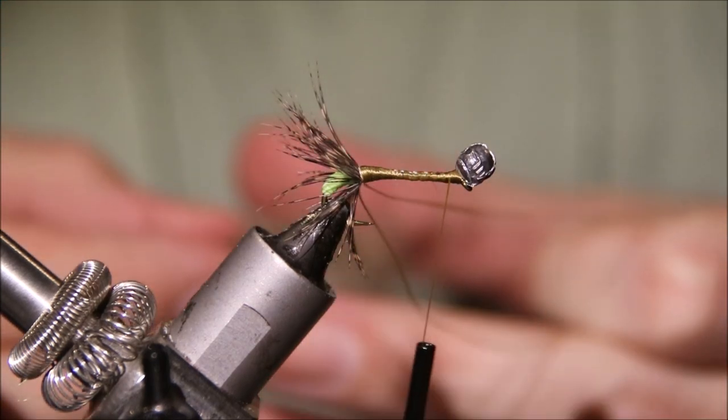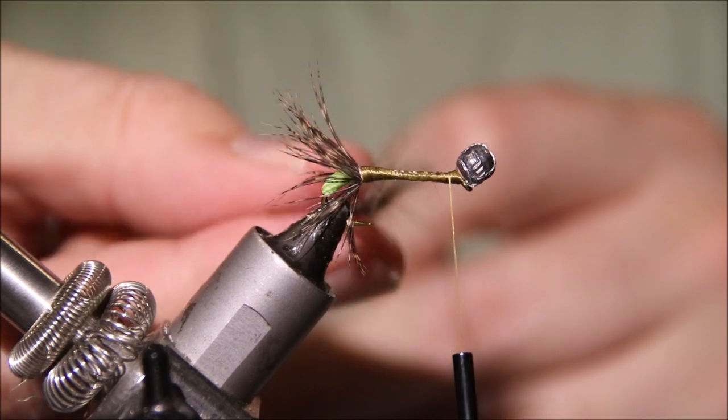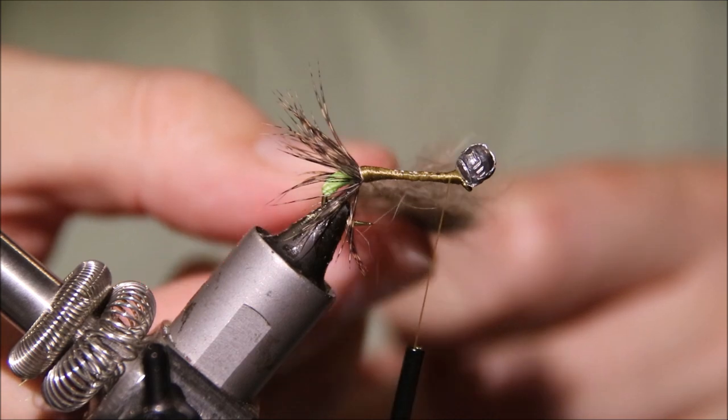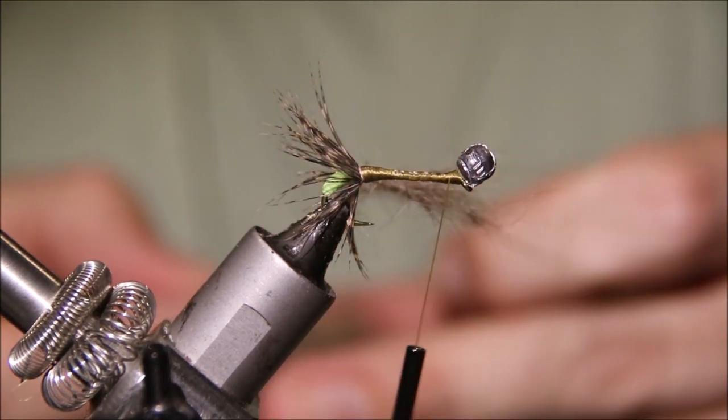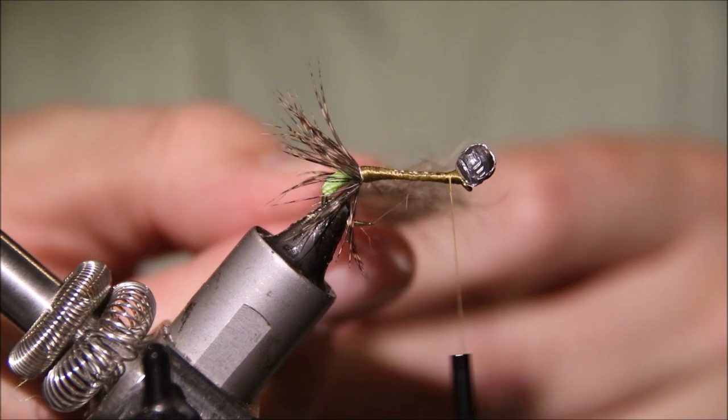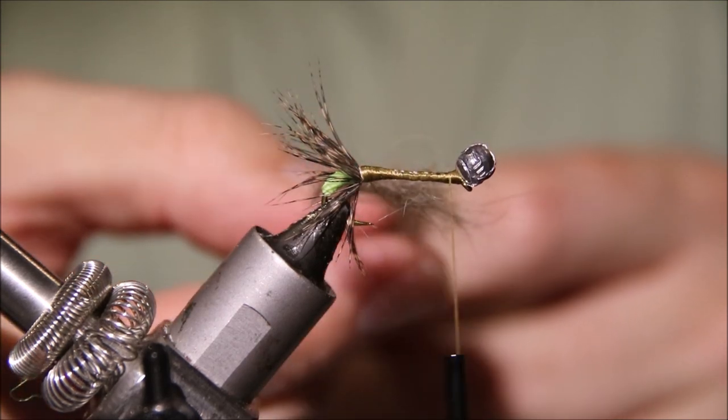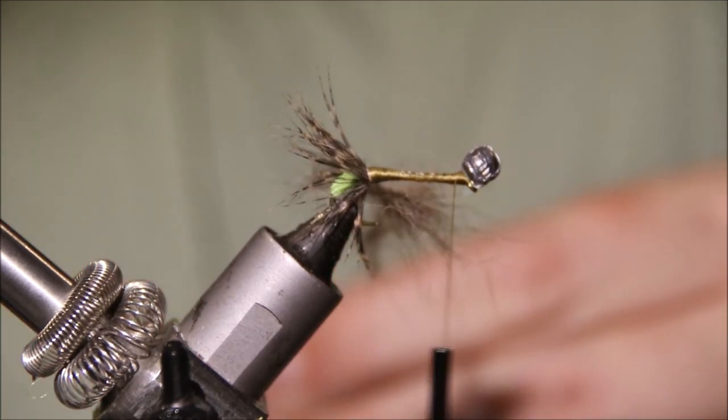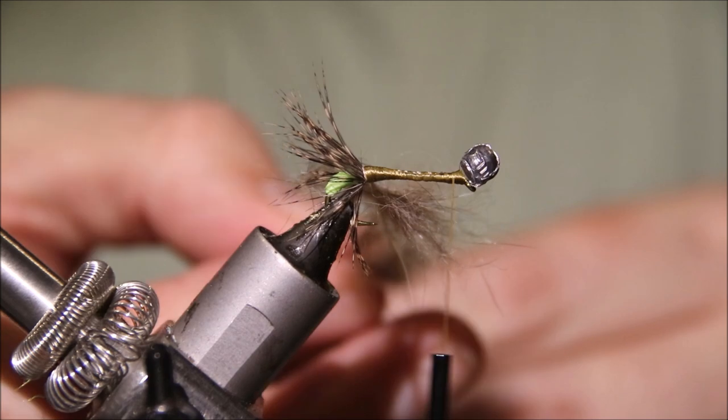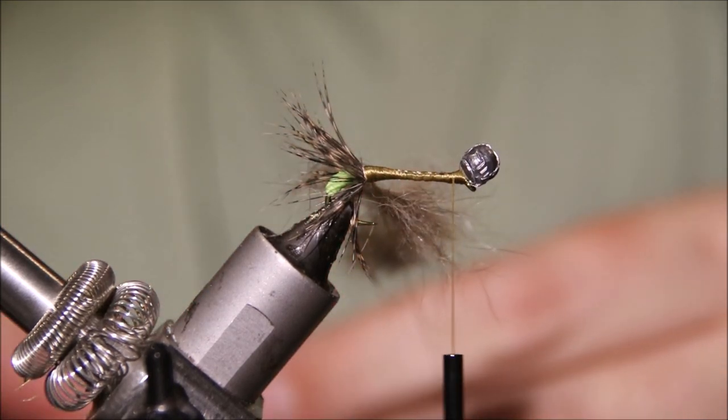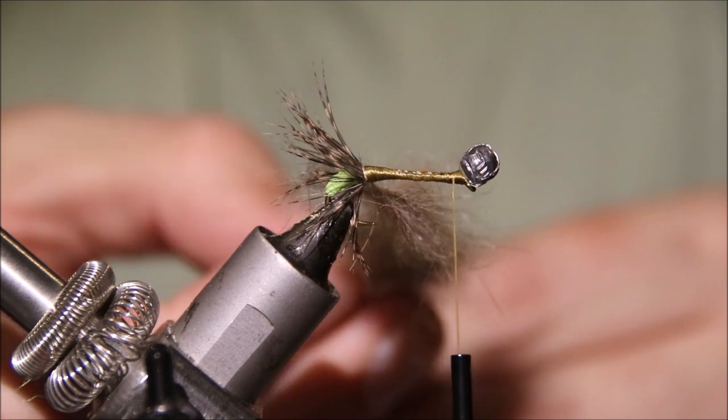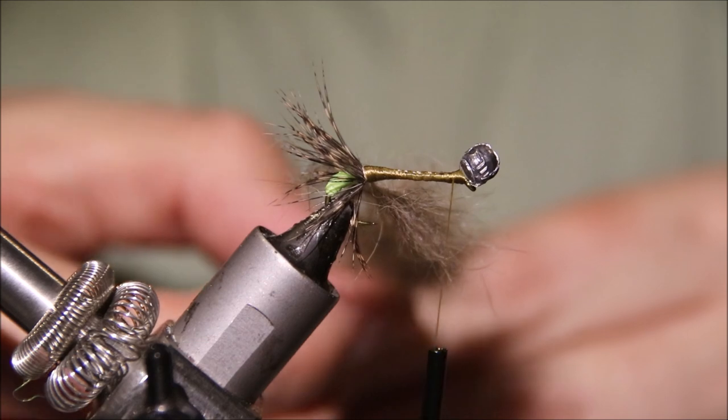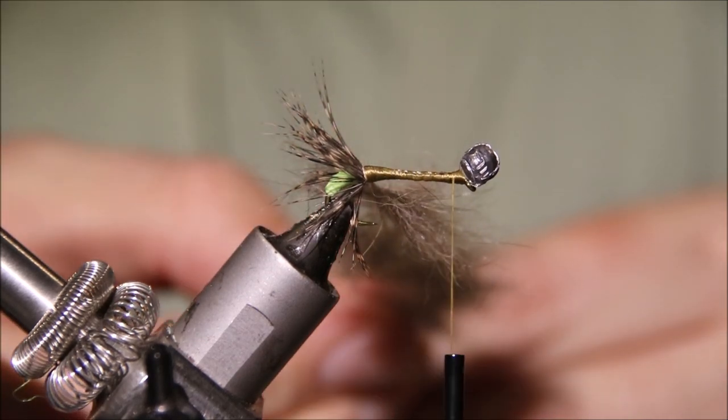The cased section is just any kind of buggy natural dubbing. I'm using a mix of hare's ear, or hare's mask, and squirrel. Don't be shy—you can fairly load this up. You can't have too much.